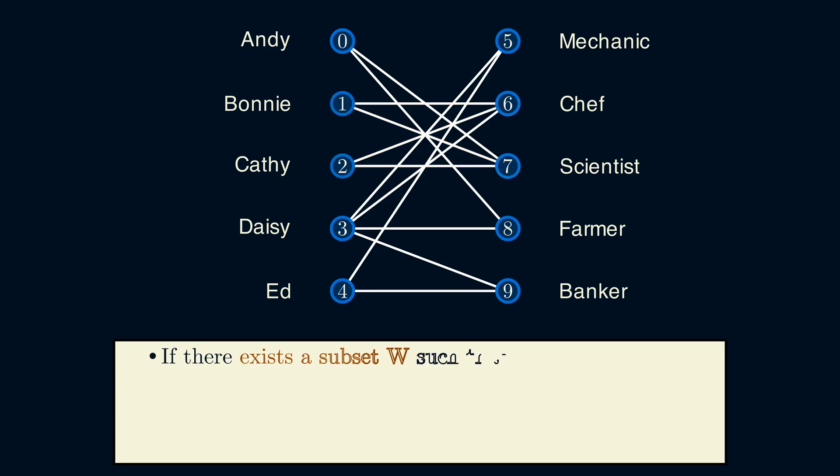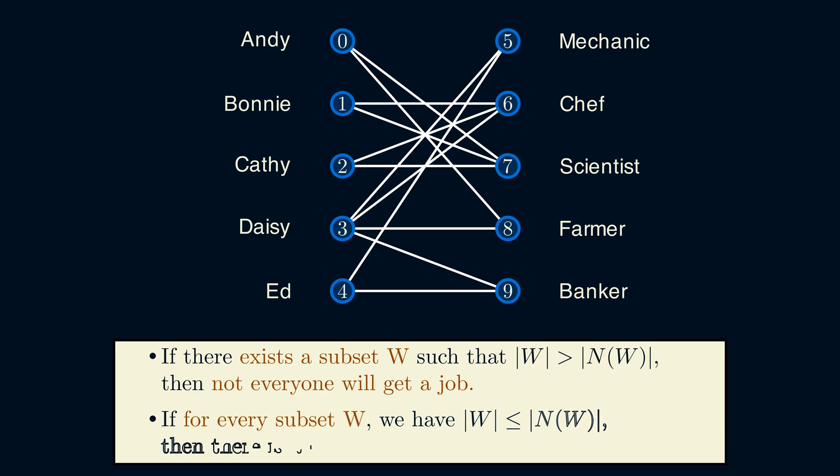So, we can rewrite our observation as, if there is a set of people W where it's larger than its neighborhood, then not everyone can get a job. What's surprising is that the converse of this statement is also true. For each subset W of people, if the neighborhood of W is at least as large as W, then there is a matching where everyone has a job. These two statements combined is called Hall's theorem, which is a classic theorem in graph theory.